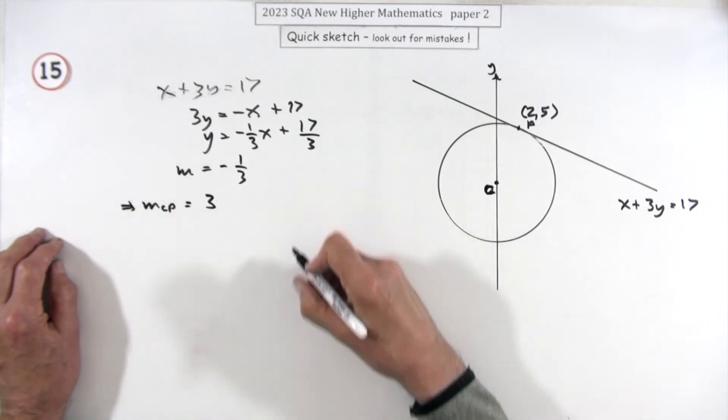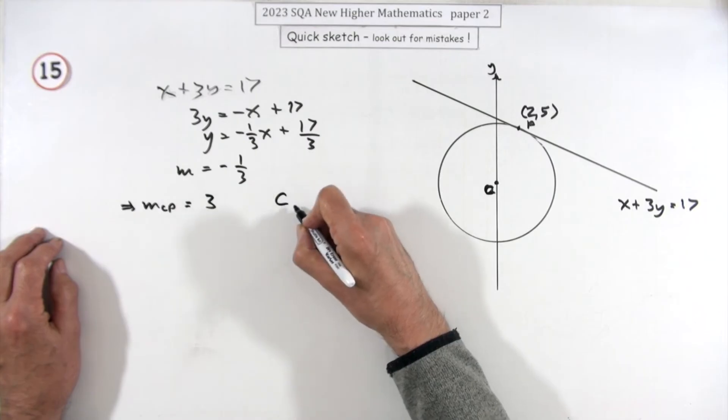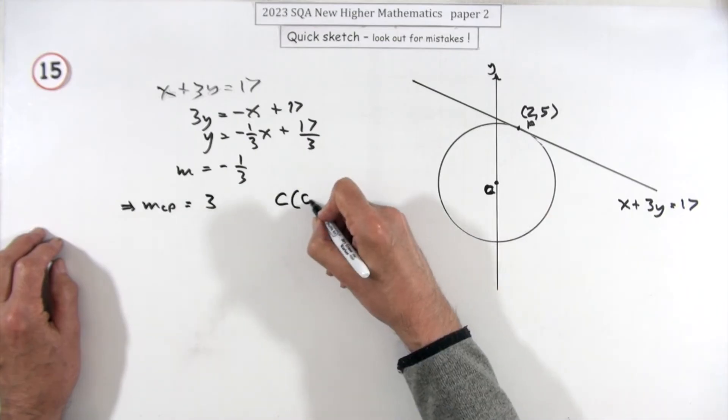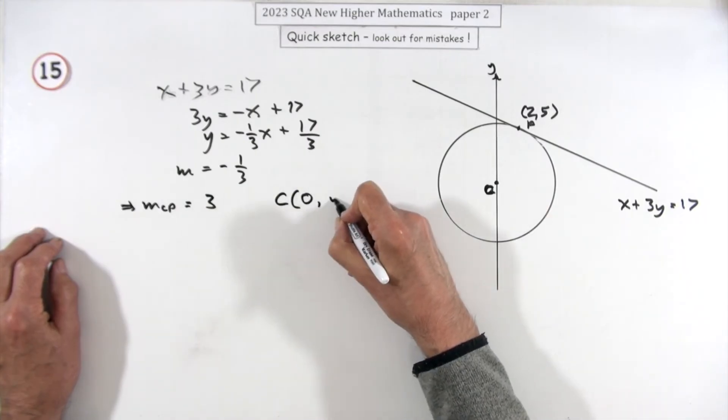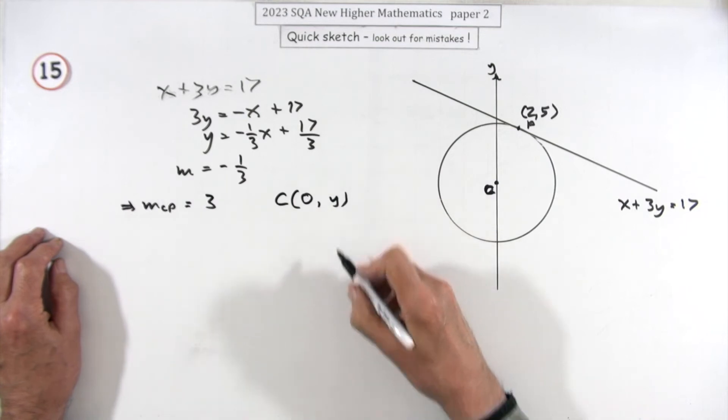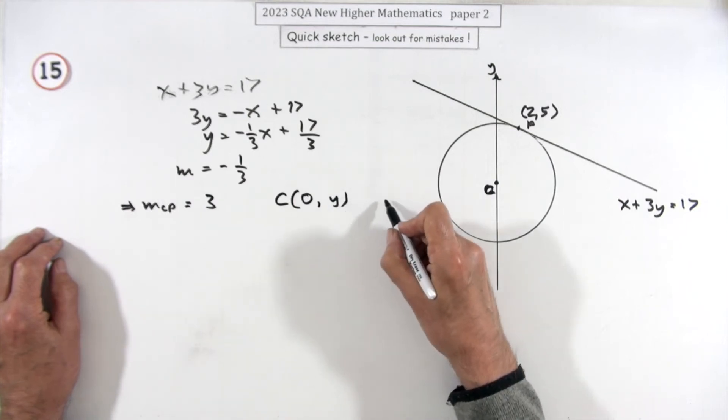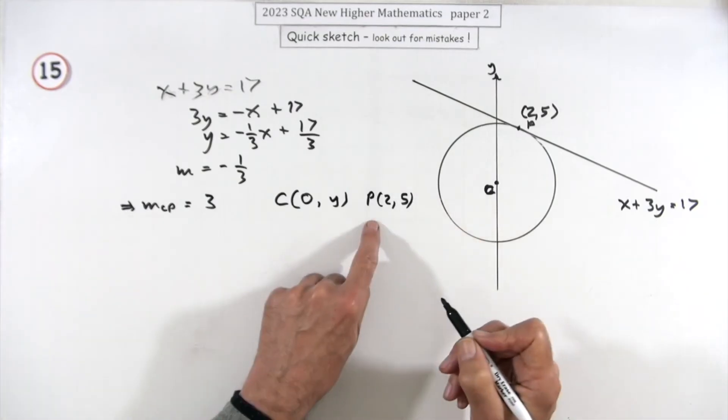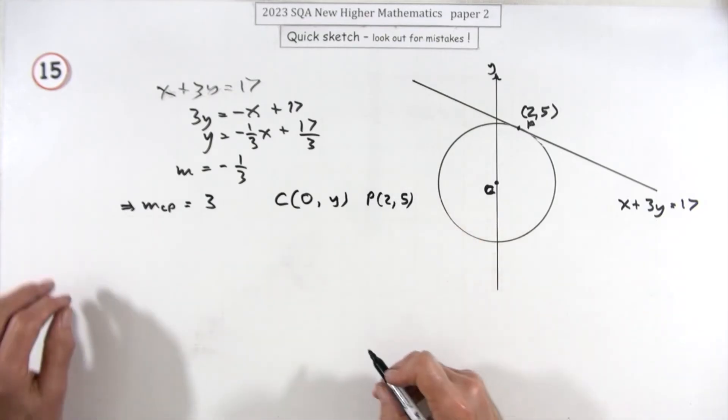Now we just need to say this then. So if you've got the point C and all I know about C is it's zero something, so I'll just call it zero y. It's going from zero y to the point two five P, which I'm calling two five, and that gradient should equal that.